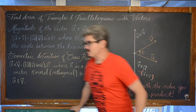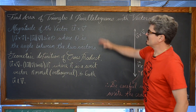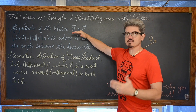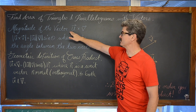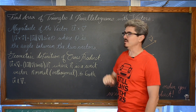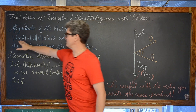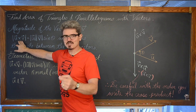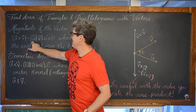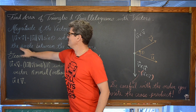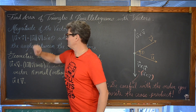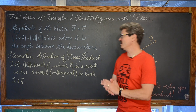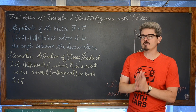Look at these definitions here. The magnitude of the vector which is the result of doing the cross product between vector u and v — the magnitude of that cross product vector — is equal to the magnitude of vector u times the magnitude of vector v times the sine of theta, where theta is the angle between the two vectors.